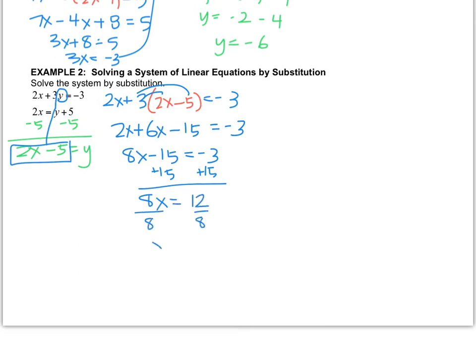That doesn't go in evenly, but when I reduce it, I get 1.5 or 3 halves. Now this is a perfect example why you need this technique because when we were graphing, we never had decimal intersections. It's really hard to estimate a decimal intersection. So we know that our x value is at 1.5.